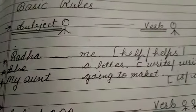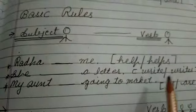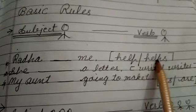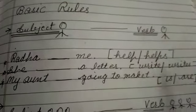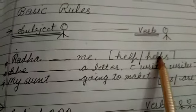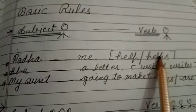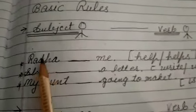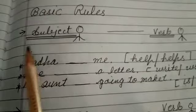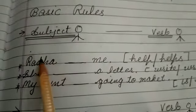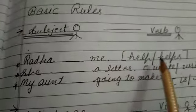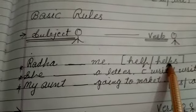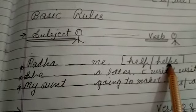Since Radha is singular, the subject is singular, so we shall apply 'helps' — that is the singular main verb. Next: 'She __ a letter.' Options are write or writes. She is singular, so we apply the singular verb, that is 'writes.' So: She writes a letter.